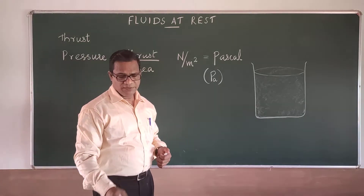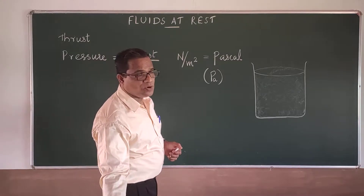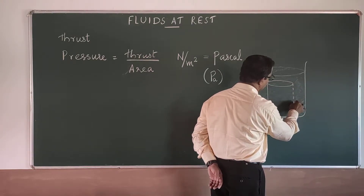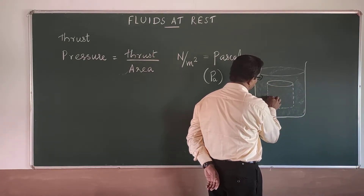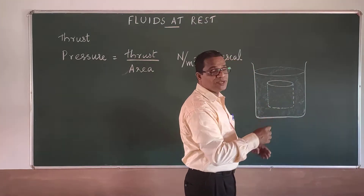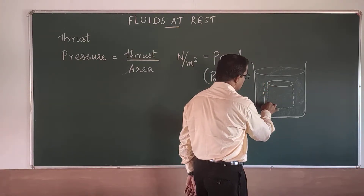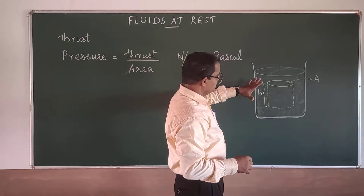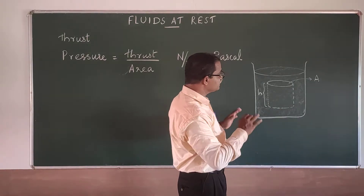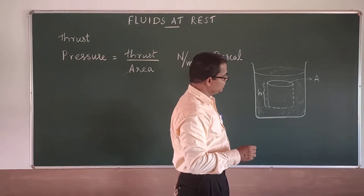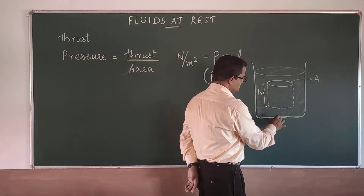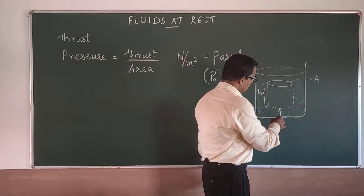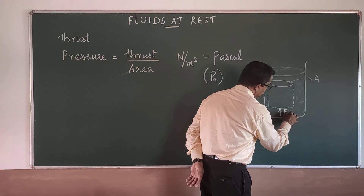To understand the effect of gravity, let us consider a small column of liquid inside the liquid. As the liquid is at rest, this column of liquid is also at rest. If I take the height of the column as H and the area of the column as A, then for this column of liquid to be at rest, the resultant force acting on it will be zero. From all sides, forces cancel, so effectively there will be a force P2 into A holding it at that particular point.